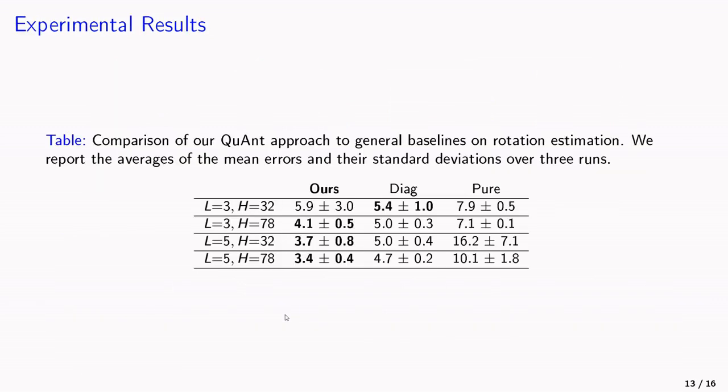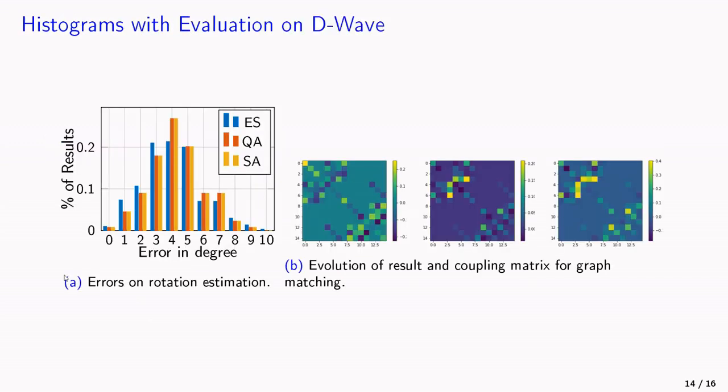And we have seen that for multiple network architectures, our method performed the best in these cases. On the test data, we have also tried out different QUBO solvers here in rotation estimation experiments. So we had exhaustive search, quantum annealing, and simulated annealing. As we have seen, the error in degree was a little bit lower for exhaustive search, and quantum annealing and simulated annealing had about the same performance. Here in B, we see some of the evolution of the coupling matrix for these graph matching experiments.